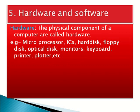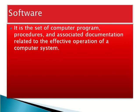The fifth component of computer is hardware and software. The physical components of a computer are called hardware, for example microprocessor, hard disk, monitor, keyboard, and mouse. Software is the set of computer programs, procedures, and associated documentation related to the effective operation of a computer system.